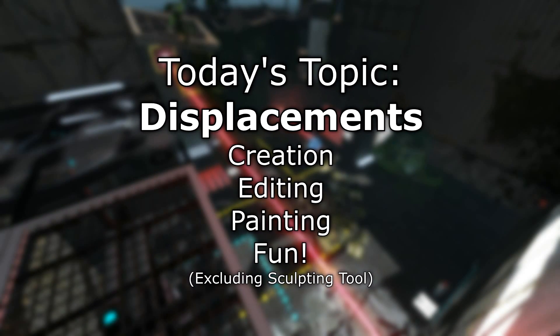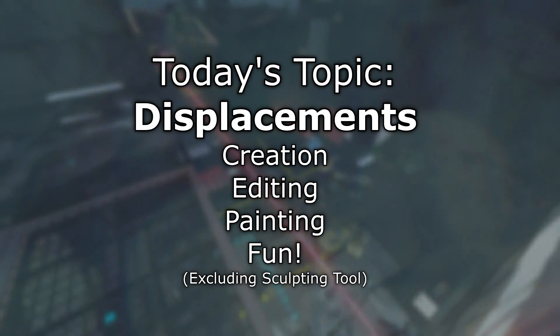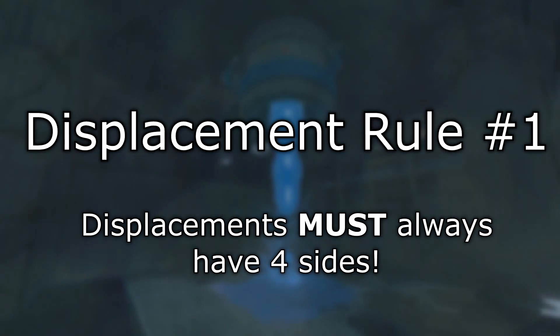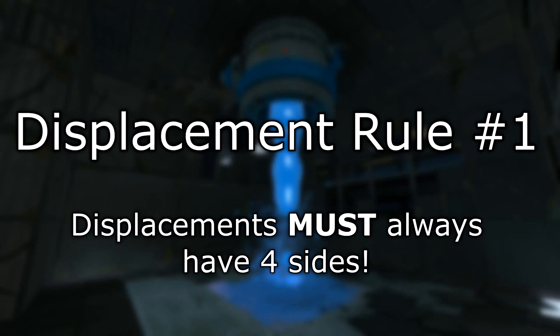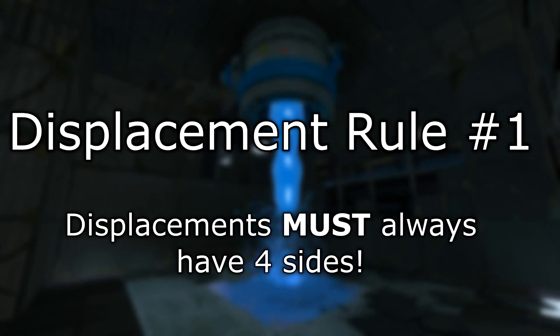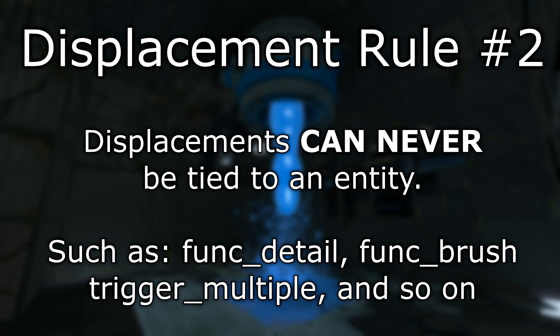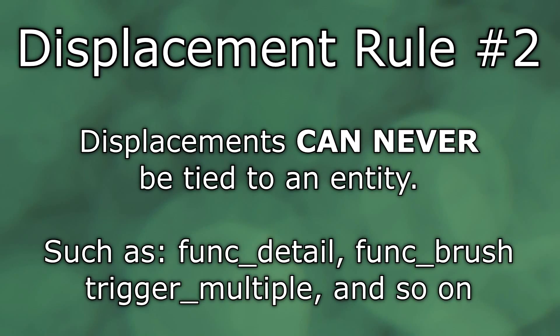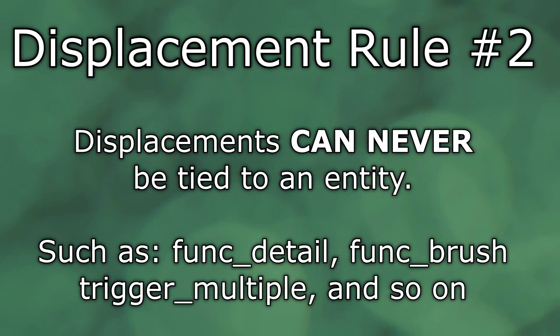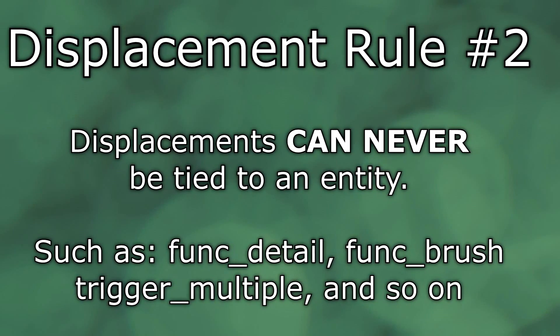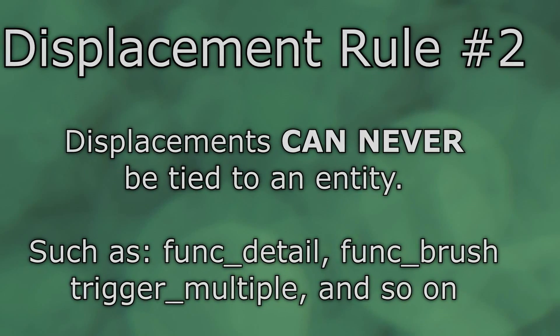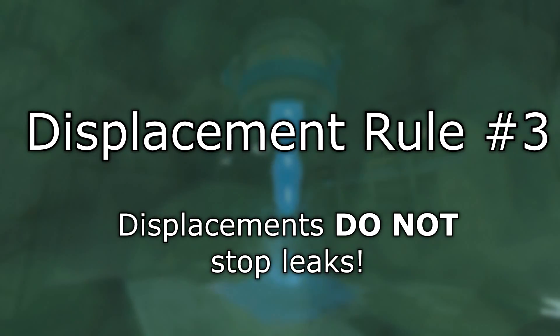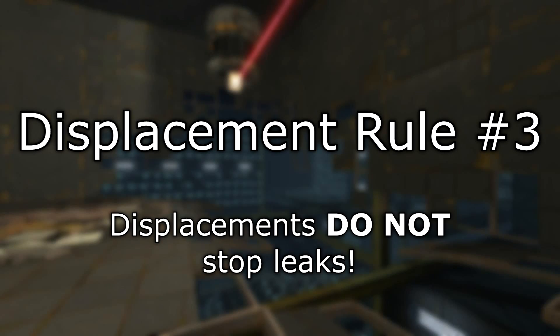Today will be the creation, implementation, and painting of displacements in your level. There are a few things we need to know before we create displacements. The first is that a displacement must always have four sides. A displacement cannot be an entity — for instance a func_detail, func_breakable, func_brush, or so on — as it will cause a VBSP compile error, and you'll need to move the brush back to the world before the map will compile properly. And the last thing is that displacements do not stop leaks from reaching the void.